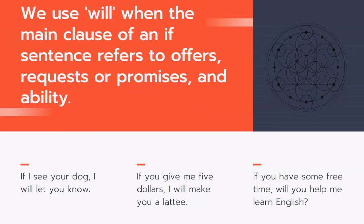Where it gets tricky: we use will when the main clause of an if sentence refers to offers, requests, promises, or ability. For example: 'If I see your dog, I will let you know' — that's a promise or offer. 'If you give me five dollars, I will make you a latte' — that's a promise. 'If you have some free time, will you help me learn English?' — that's a request. So remember: offers, requests, promises, and ability — we use will.